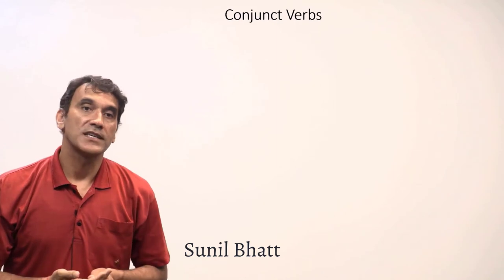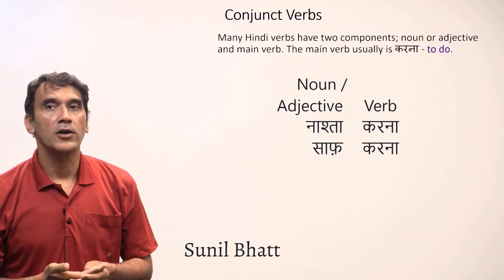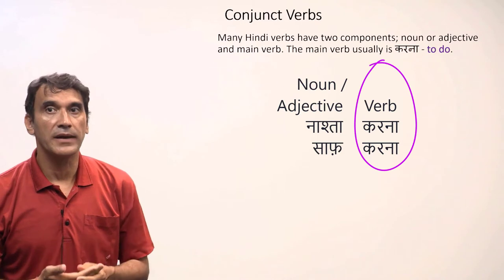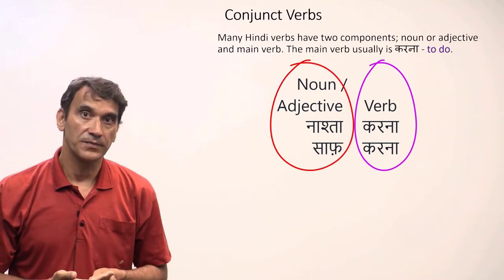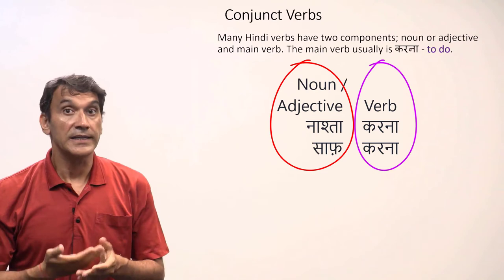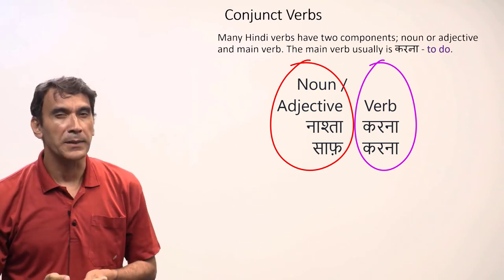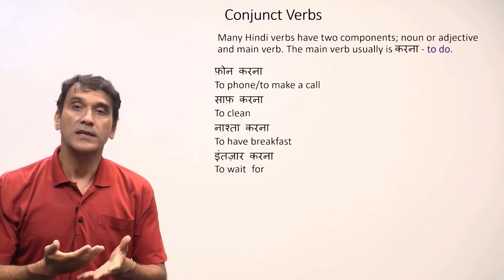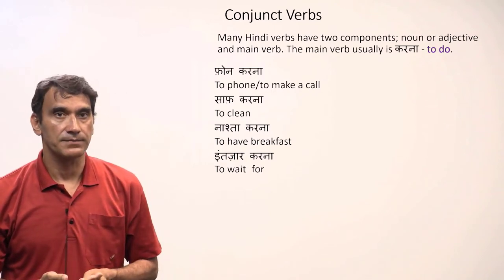The next grammar point is conjunct verbs. Hindi has a lot of verbs that consist of two components — a verb and a noun or an adjective. These verbs are called conjunct verbs. They together express an action. The main verb is usually 'karna'. The concept of conjunct verbs will be clear with examples.